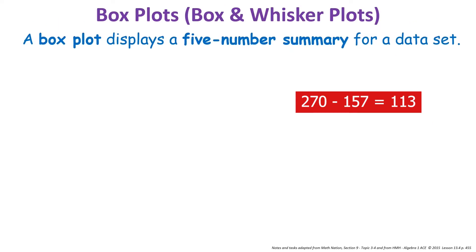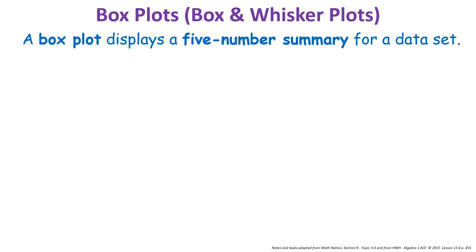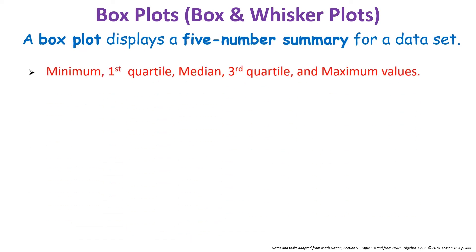The first type of graph we're going to look at is a box plot, often called a box and whisker plot. It displays a five-number summary for a data set: the minimum, first and third quartile, the median, and the maximum values — words we just reviewed and learned how to find. In a box and whisker plot, a quartile represents 25% of the data.